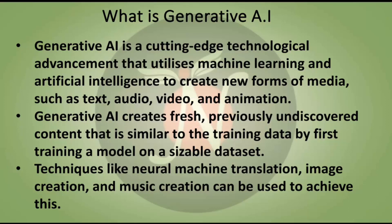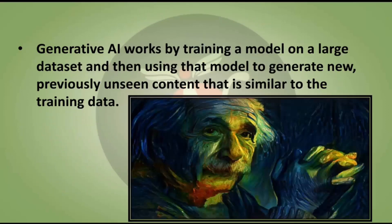Techniques like neural machine translation, image creation, and music creation can be used to achieve this. Generative AI works by training a model on a large dataset and then using that model to generate new, previously unseen content that is similar to the training data. An example image shown here has been made using generative AI.